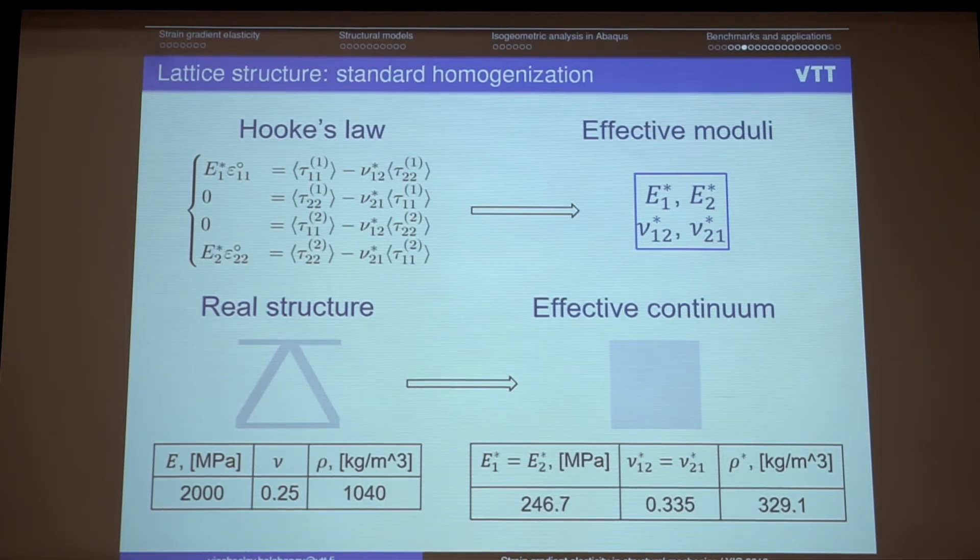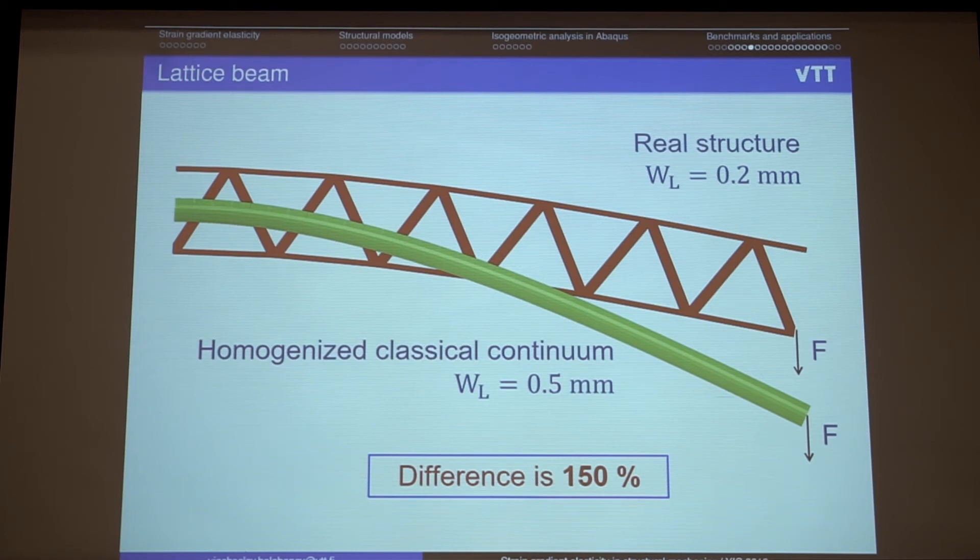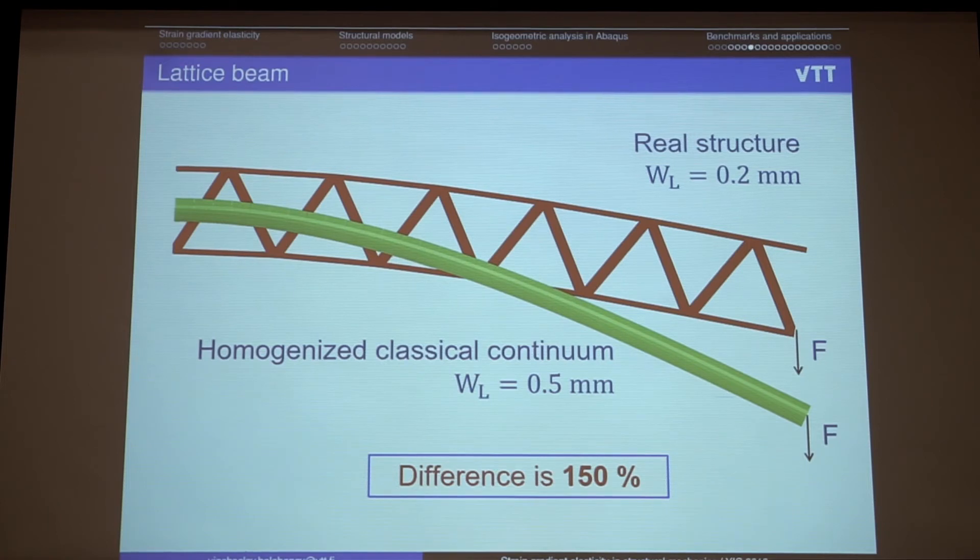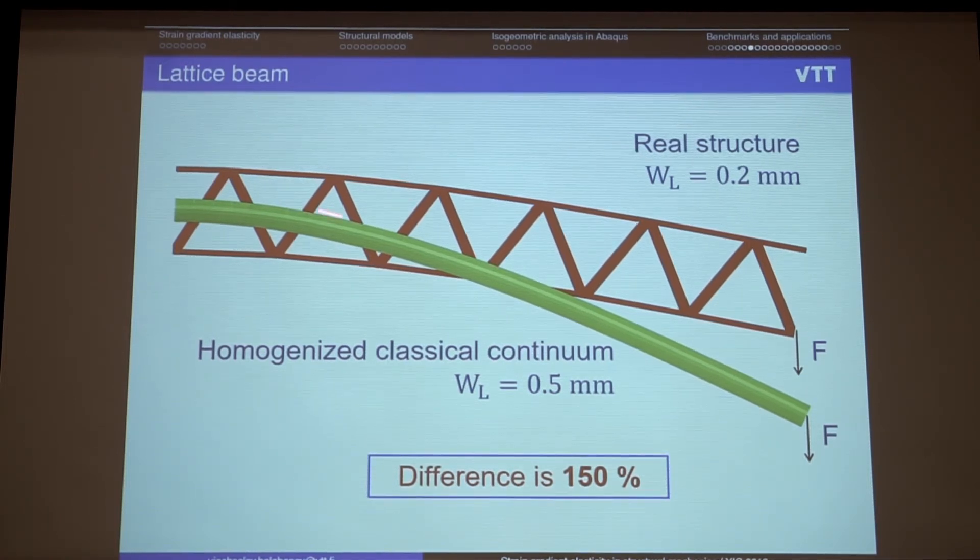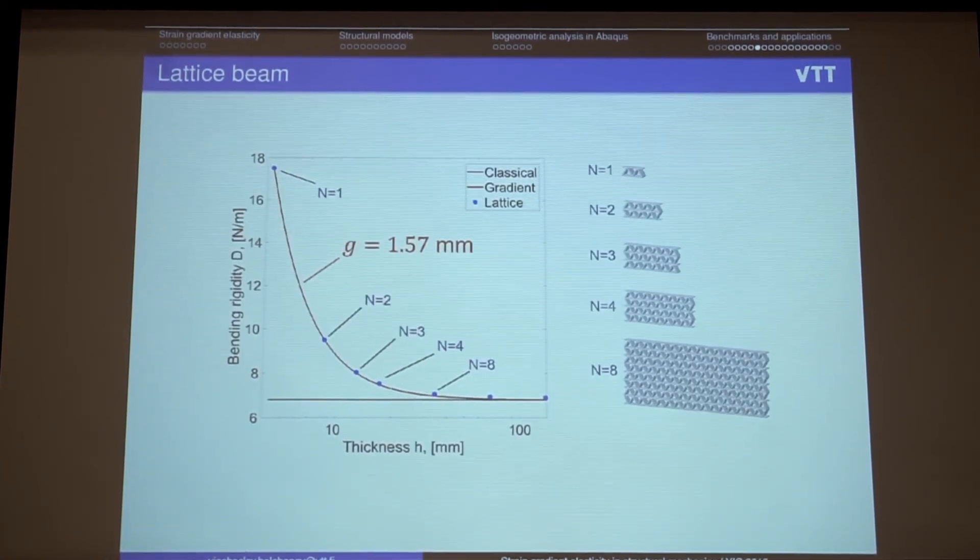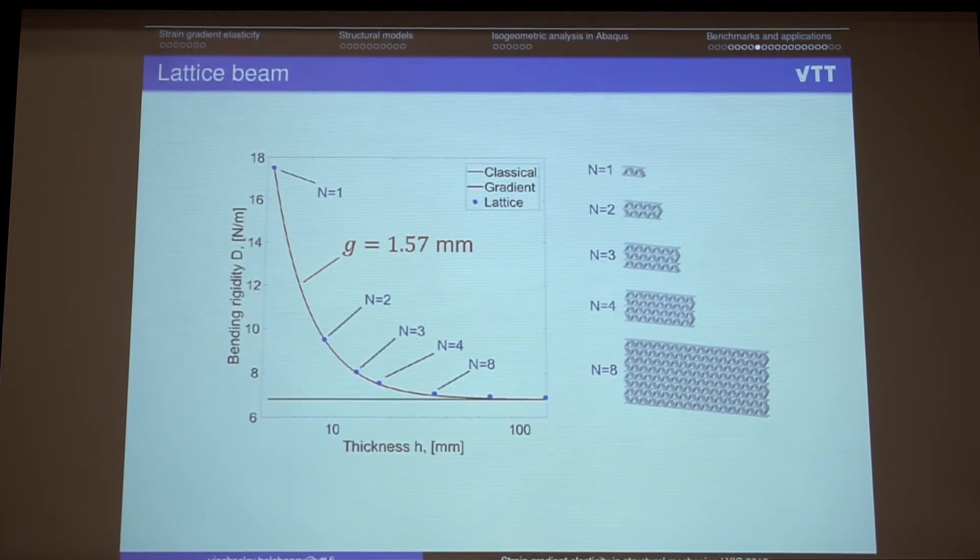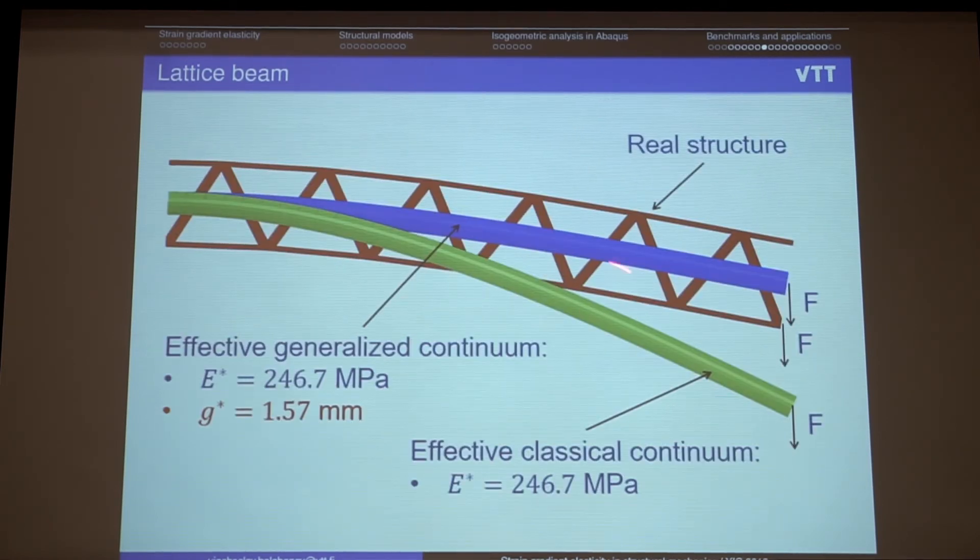And we also can show that comparing the results for the beam model by using this homogenized parameter. The beam model cannot explain the behavior of such kind of structures. But if we also introduce strain gradient elasticity, we can capture the behavior of such kind of structures. Here it is shown.